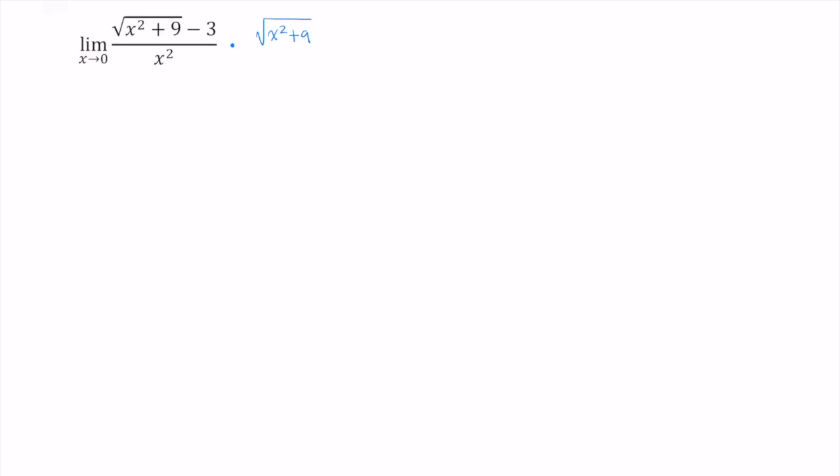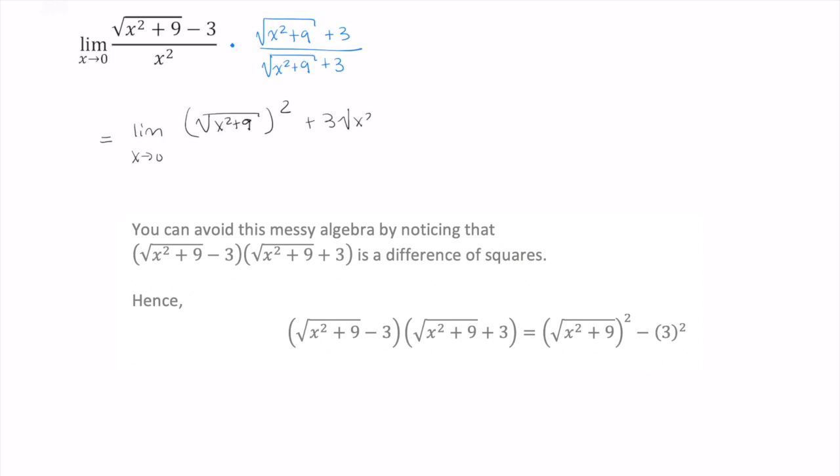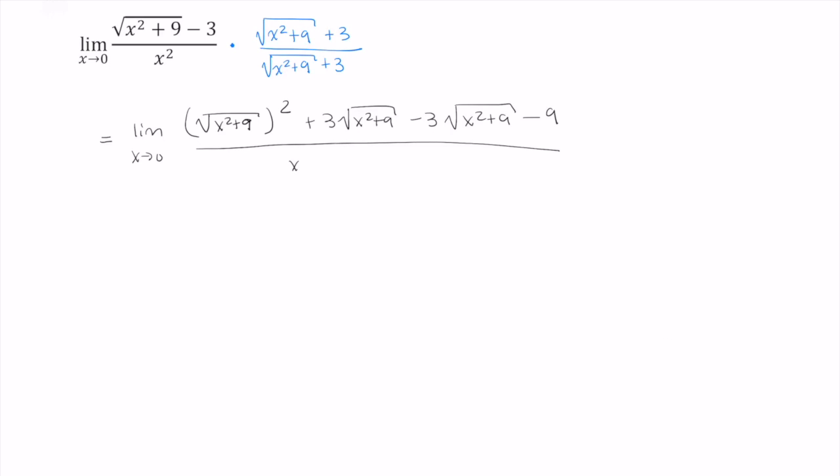So the conjugate of x squared plus 9 under the square root minus 3 is the square root of x squared plus 9 plus 3. This simplifies to the limit as x approaches 0 of the square root of x squared plus 9 squared plus 3 times the square root of x squared plus 9 minus 9. And this entire quantity is over x squared times the square root of x squared plus 9 plus 3.